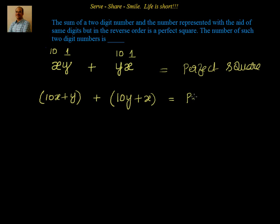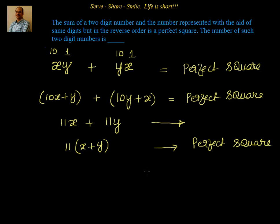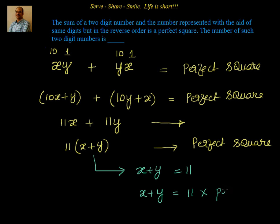We know their sum is a perfect square. Simplifying: 10x plus y plus 10y plus x gives 11x plus 11y, which is a perfect square. That means 11 into (x plus y) is a perfect square. For this to hold, there are two conditions: x plus y equals 11, or x plus y equals 11 multiplied by a perfect square. But we are interested in two-digit numbers.